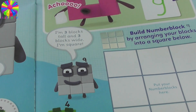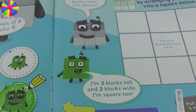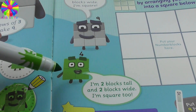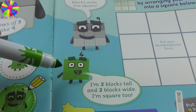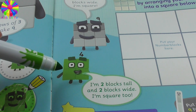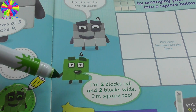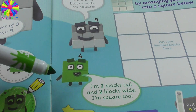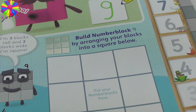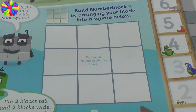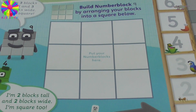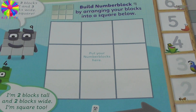I'm three blocks tall and three blocks wide — I'm square! Number Block Four is a square too, but Number Block Four is two blocks tall and two blocks wide. Build Number Block Nine by arranging your blocks into a square. Let's make Number Block Nine into a square.